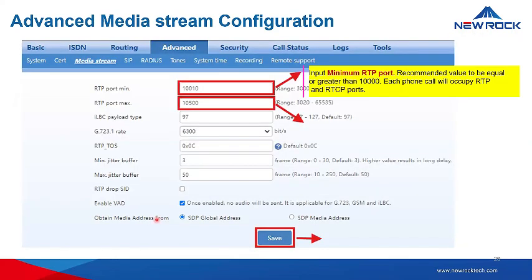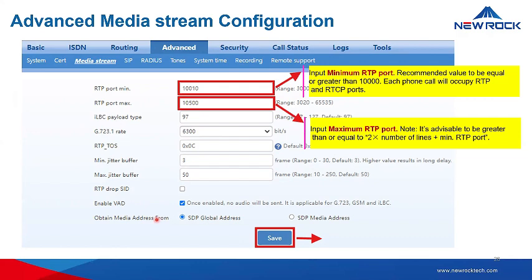Here is the advanced media stream configuration. The minimum RTP port should be greater than 10,000, as each phone will occupy RTP and RTCP ports. The maximum RTP port is advisable to be greater than two times the number of lines plus the minimum RTP port. Set the values accordingly and click save.